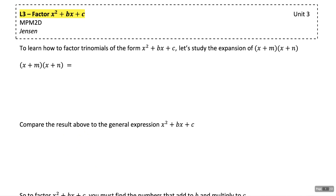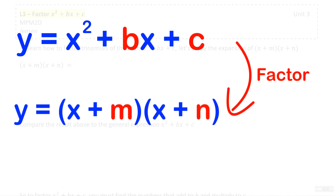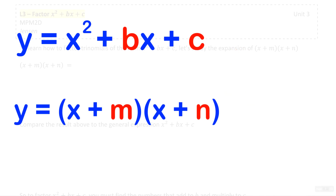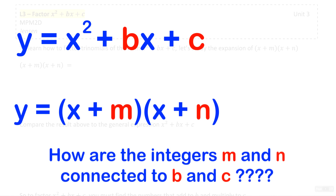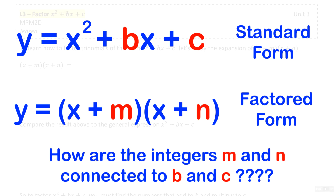This is the third lesson in the factoring unit. In this lesson you're going to learn how to factor quadratics in the format x squared plus bx plus c, where b and c are integer values. To learn how to factor trinomials in that format, we're going to carefully study the expansion of x plus m times x plus n, and understand the relationship between the standard form quadratic and its equivalent factored form.